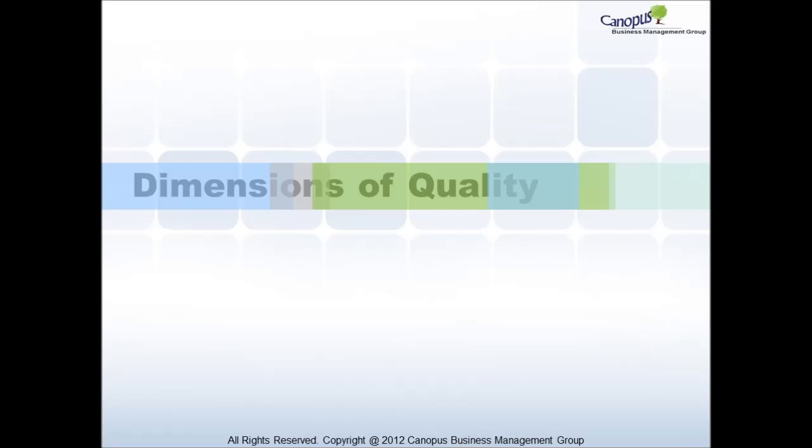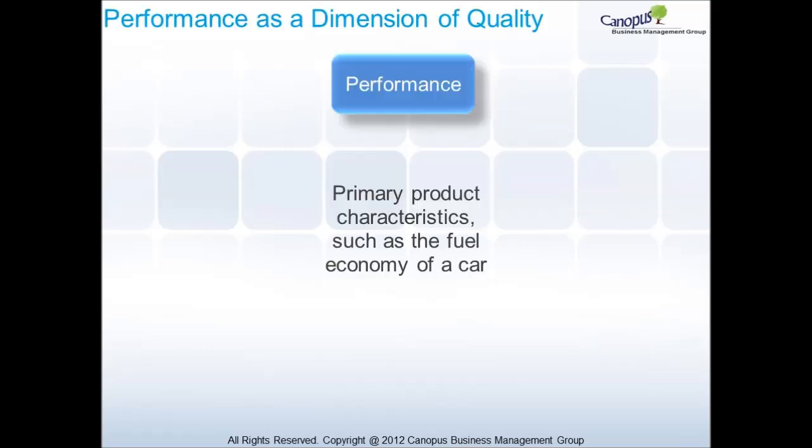Let's take the example of an automobile to understand the composite characteristics and the different dimensions of quality. When you consider performance as a dimension of quality, it includes primary product characteristics, such as the fuel economy of a car.